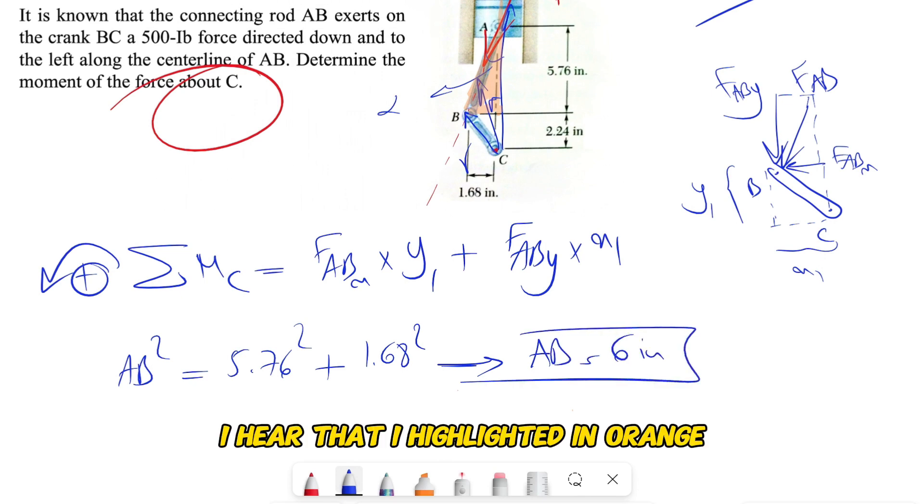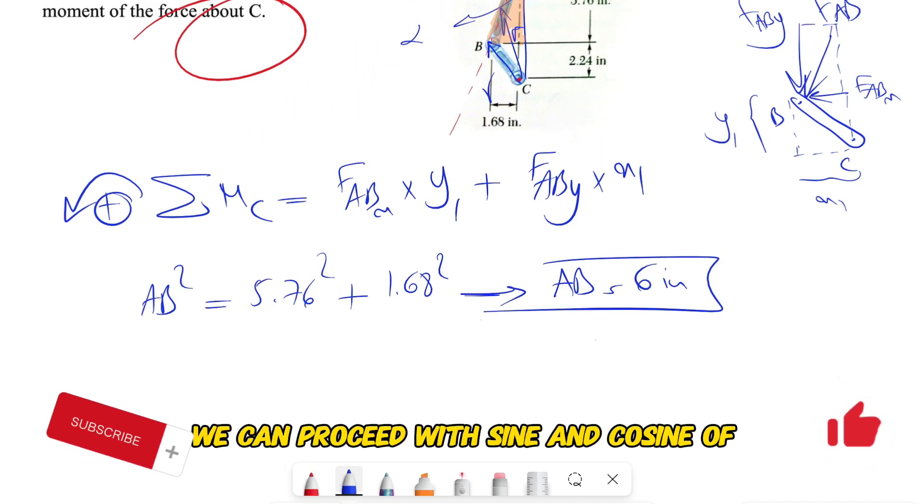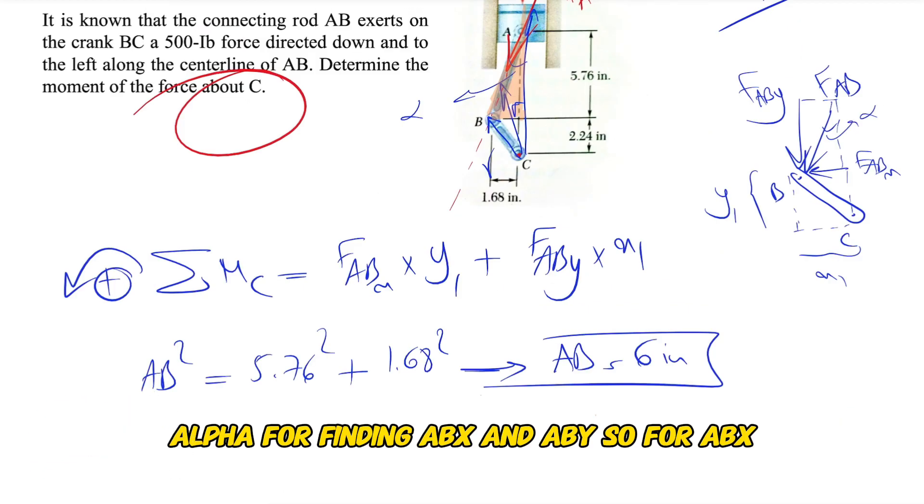Highlighted in here in orange. And if we do that, we can find AB equals 6 inches. And now that we have this, we can proceed with sine and cosine of alpha for finding ABx and ABy.